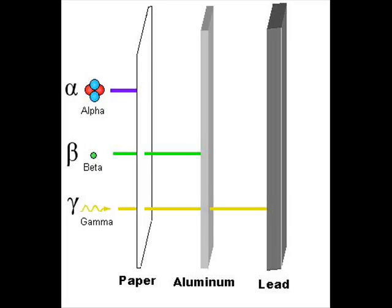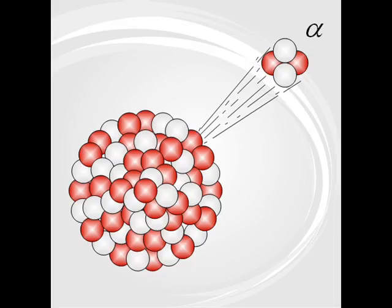This picture shows three different types of radiation and their penetration levels. Alpha particles have the shortest ranges and matter that is only a few millimeters thick will stop them. Alpha radiation is dangerous if ingested or inhaled.